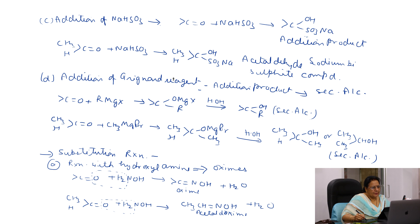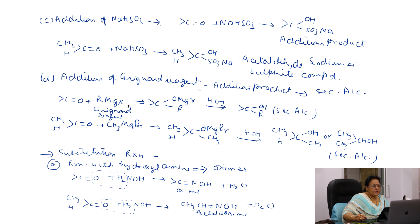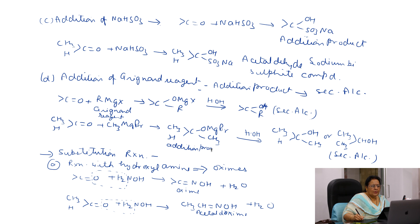The next reaction is addition of Grignard reagent. Grignard reagent forms an addition product, which on hydrolysis gives a secondary alcohol. Formaldehyde gives a primary alcohol. The Grignard reagent is RMgX; addition takes place at the carbonyl group giving OMgX and R, and on hydrolysis this gives an OH group in place of OMgX to yield a secondary alcohol. When acetaldehyde reacts with methyl magnesium bromide (Grignard reagent), we get an addition product, which on hydrolysis gives isopropyl alcohol, which is a secondary alcohol.